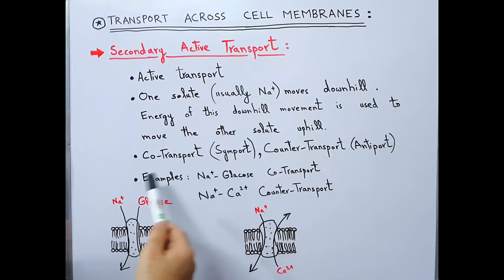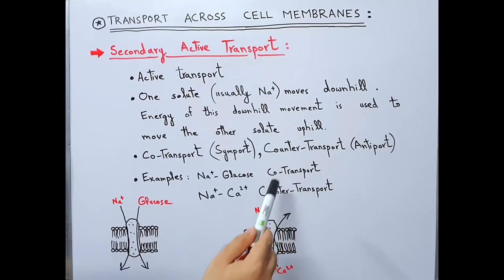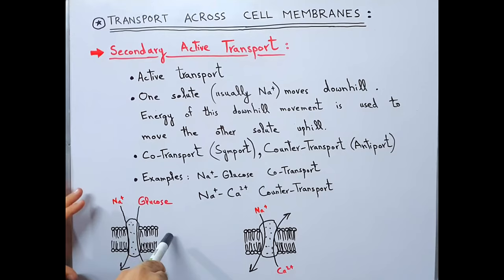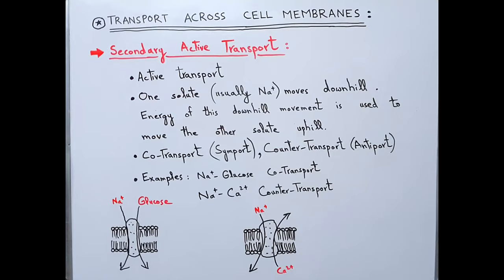If the transport of both solutes is happening in the same direction, like in sodium-glucose co-transport, it is called co-transport or symport. If the transport is occurring in opposite directions, it is called counter transport or antiport. Examples are sodium-glucose co-transport and sodium-calcium counter transport. In sodium-glucose co-transport, sodium moves along the concentration gradient and that energy moves glucose against the gradient — same direction, so it is co-transport. In sodium-calcium counter transport, solutes move in opposite directions, so it is counter transport or antiport.